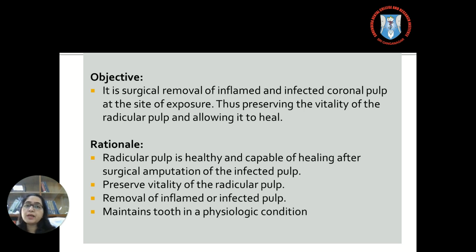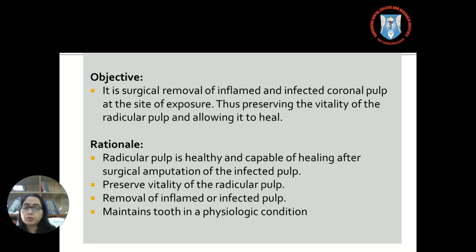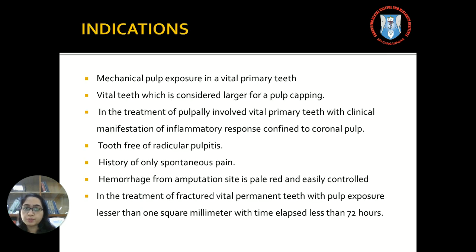The rationale behind this procedure is that the radicular pulp, which is healthy and capable of healing, is preserved after the surgical amputation of the infected coronal pulp, to preserve the vitality of the radicular pulp, and by the removal of the completely inflamed or infected coronal portion of the pulp, thus maintaining the tooth in a physiological condition.